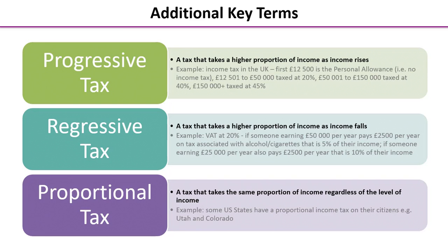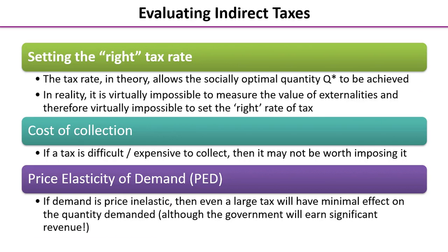Proportional taxes are more unusual — we tend to see them less. These are taxes that take exactly the same proportion of income from people regardless of their level of income. One example is that some US states have a proportional income tax on their citizens, so regardless of your level of income you pay exactly the same rate of income tax.